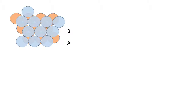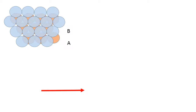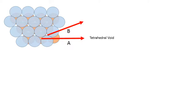If I place a blue colored sphere on the triangular void having the apex downwards, you will see that all the triangular voids having the apex downwards would subsequently be filled up. When I completely place the blue spheres above the first layer, I see that there are two types of voids being formed: the tetrahedral void and the octahedral void.